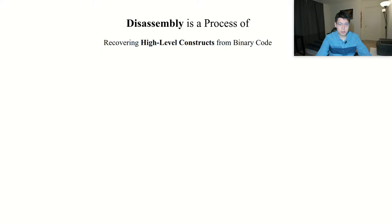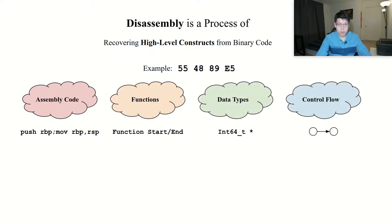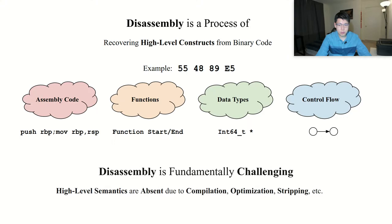By definition, disassembly is a process of recovering high-level constructs from binary code. For example, given a sequence of raw bytes from binary code, disassembly aims to recover the assembly instructions, function boundaries, source-level data types, or control flow graph. However, disassembly for stripped binary is fundamentally challenging because high-level information such as symbol tables are often stripped away for most of the real-world binaries. Therefore, disassemblers must approximate the recovery of higher-level constructs from incomplete information.